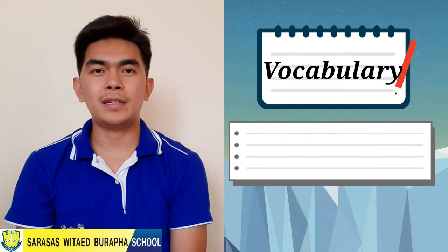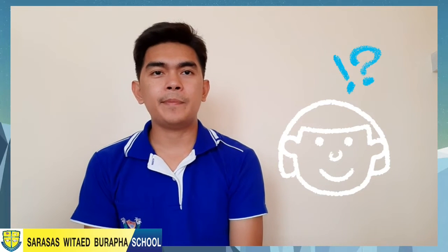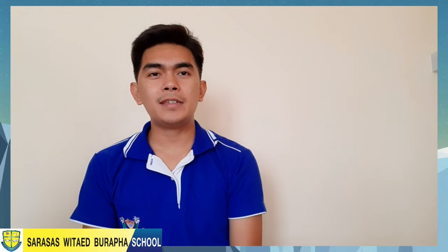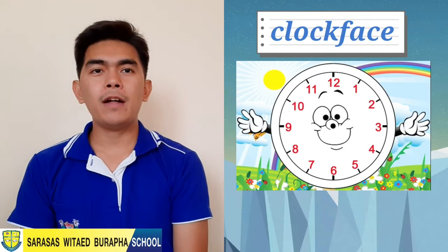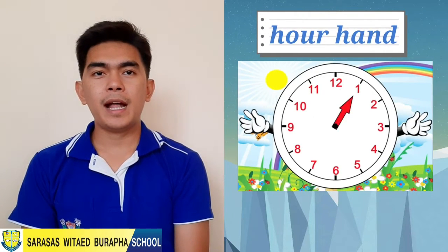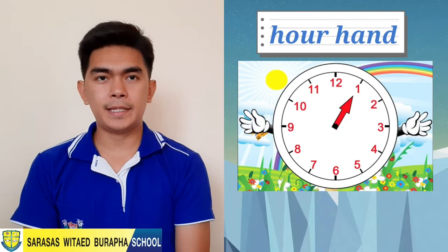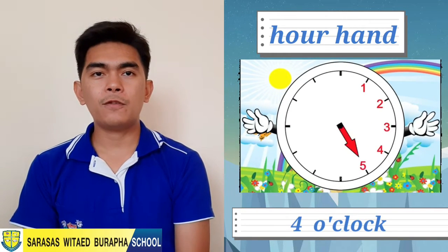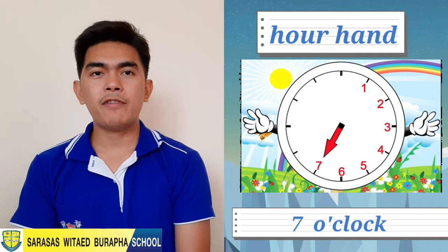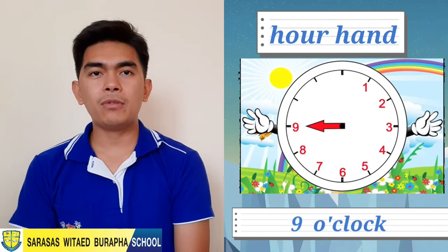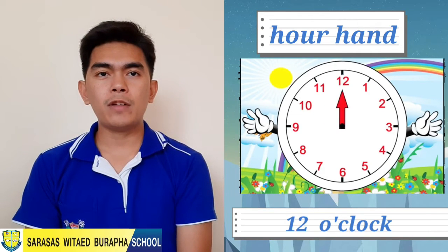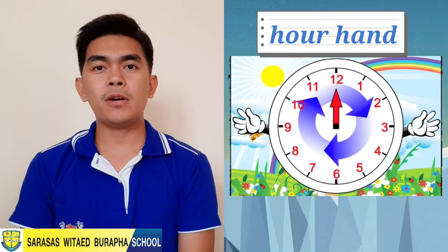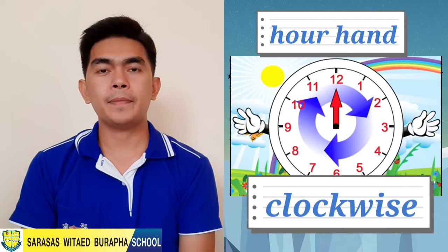How do you tell time? Of course, you need to look at the clock. Here's the clock. There are twelve hours on a clock. The little hand helps us know what hour it is: one o'clock, two o'clock, three o'clock, all the way to twelve o'clock. The clock's hand always turns in the same direction — we call this clockwise.